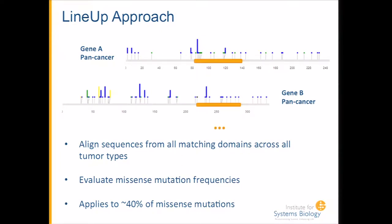This approach applies to about 40 percent of missense mutations. It leaves out other classes that could be identified through clustering or identifying hotspots elsewhere in the coding sequence. It also excludes nonsense and frameshift mutations in certain genes. What we're really focused on is identifying genes in the tail of the distribution that have positions which, when aligned, show recurrent mutations.